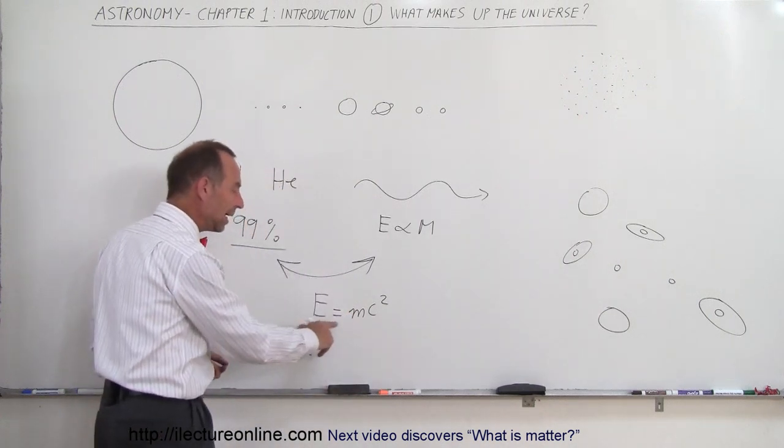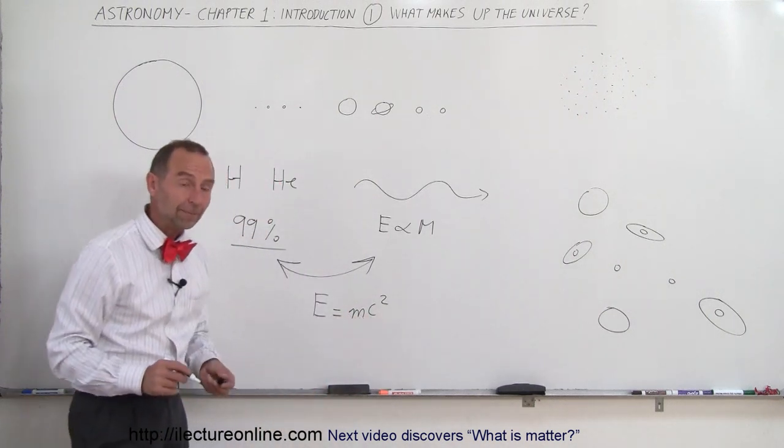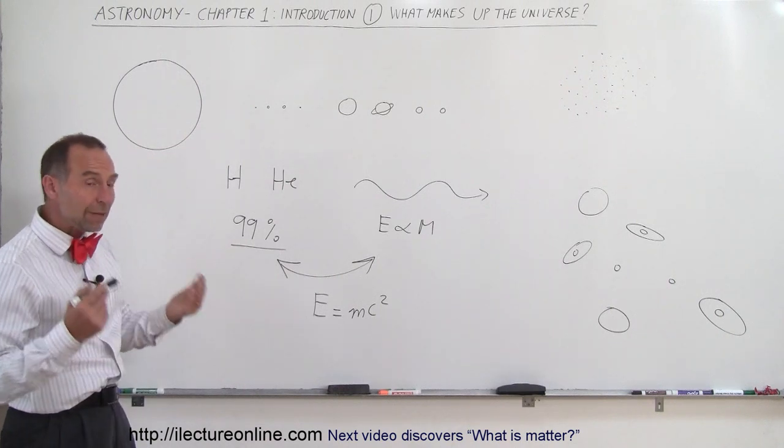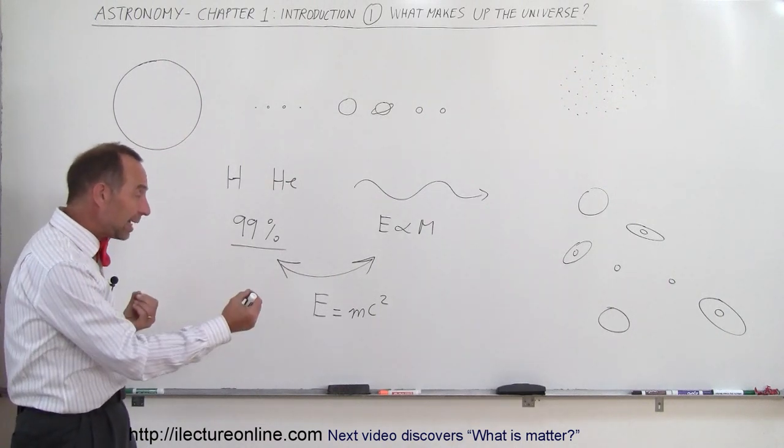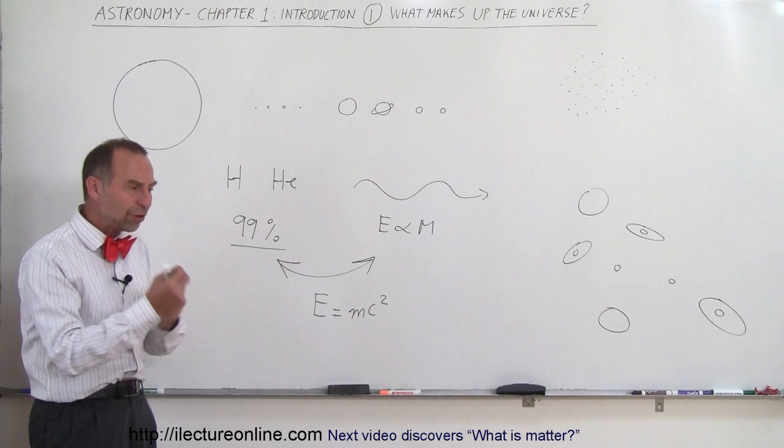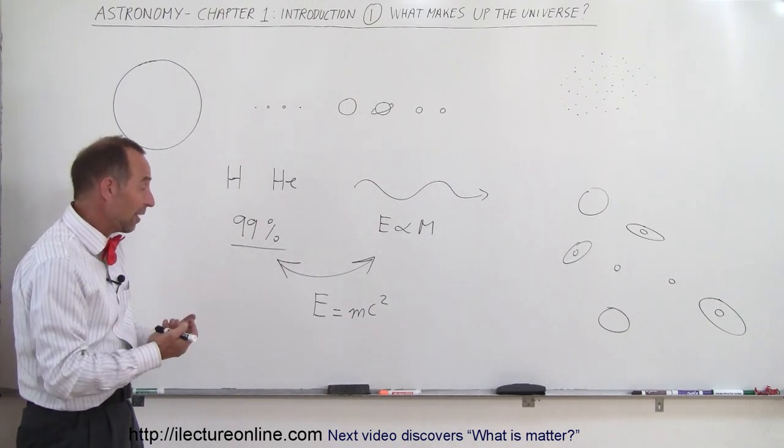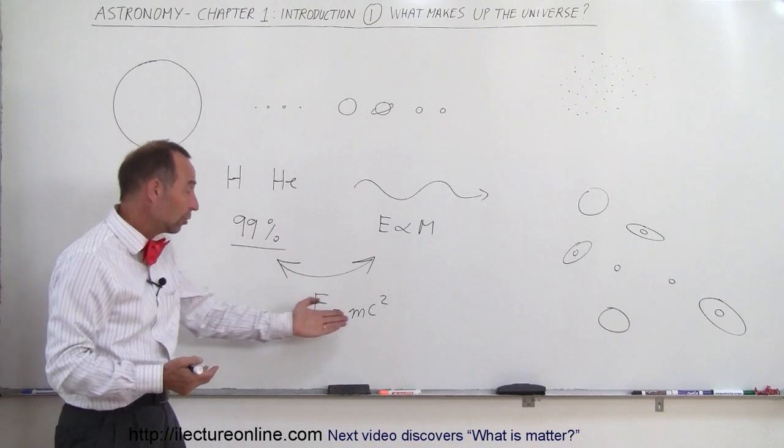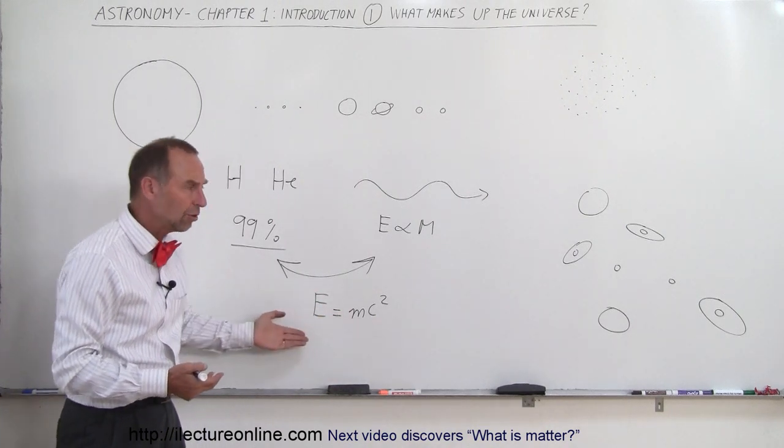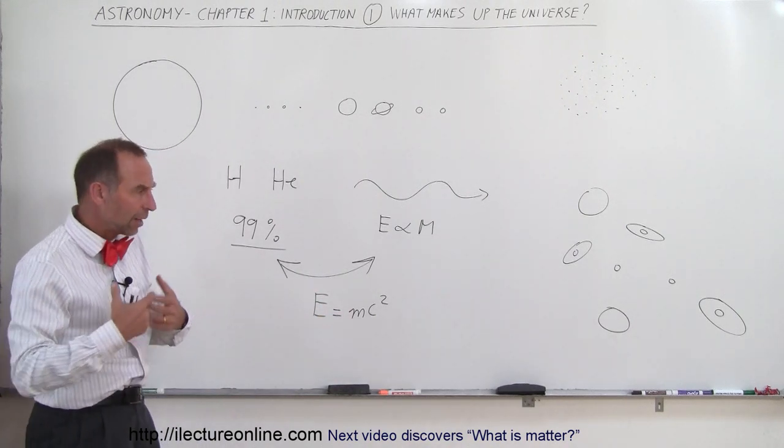E being energy, M being mass, and C being the speed of light. What that equation really means is that energy and matter are two different forms of the very same thing. In fact, we have now found that energy can be turned into matter, and matter can be turned into energy, something that happens in the universe on a regular basis.